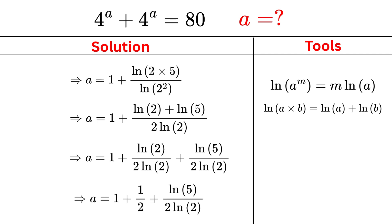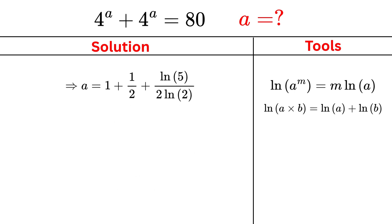Now we simplify this even more. The first part becomes 1/2, and the second part can be written as (1/2) × log(5) / log(2). So now a = 1 + 1/2 + (1/2) × log₂(5).